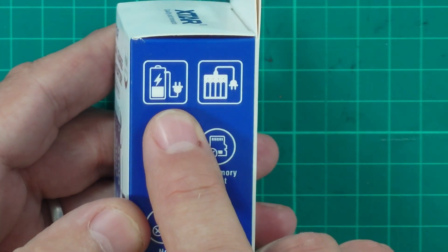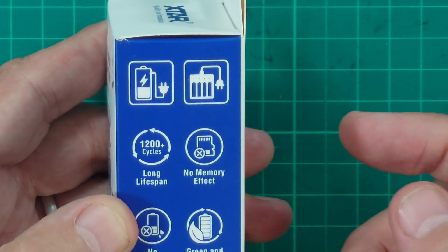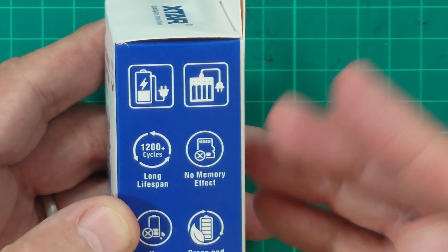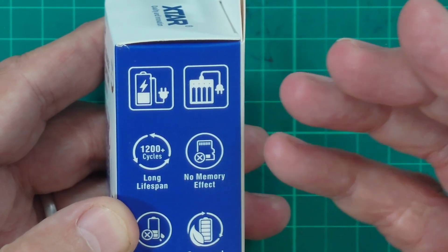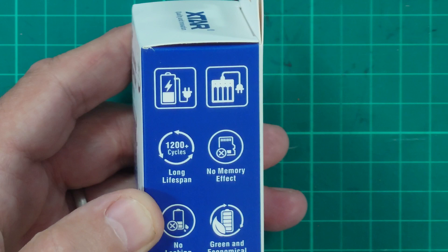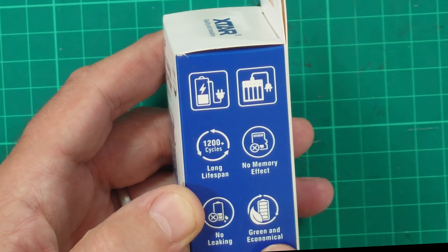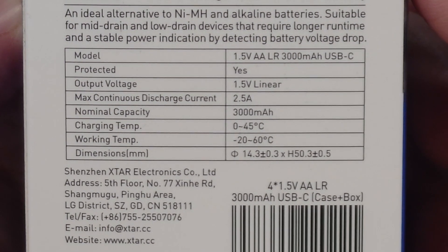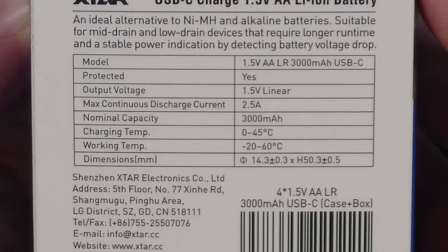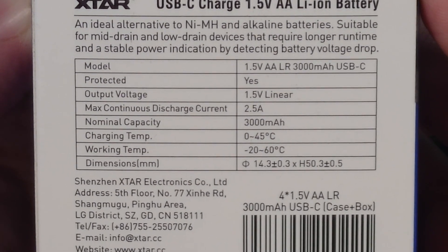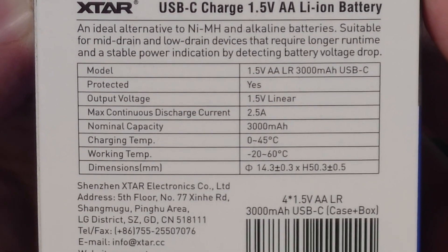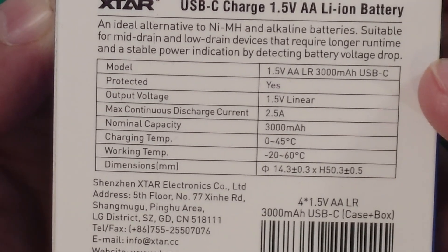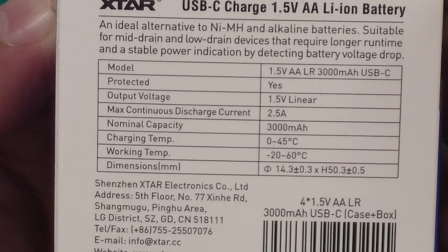On the side, it tells us they can be charged individually or via a standard charger. They have a lifespan of 1,200 cycles, have no memory effect, which is a phenomenon where a battery's capacity is reduced due to repeated partial charging and discharging. We're also informed they won't leak, and that they are green and economical. Round the back, we're informed that each battery has individual charge protection, and that the output voltage is 1.5 volts linear, which means they're designed to give a gently declining voltage in use, similar to alkaline batteries but with a higher average voltage.